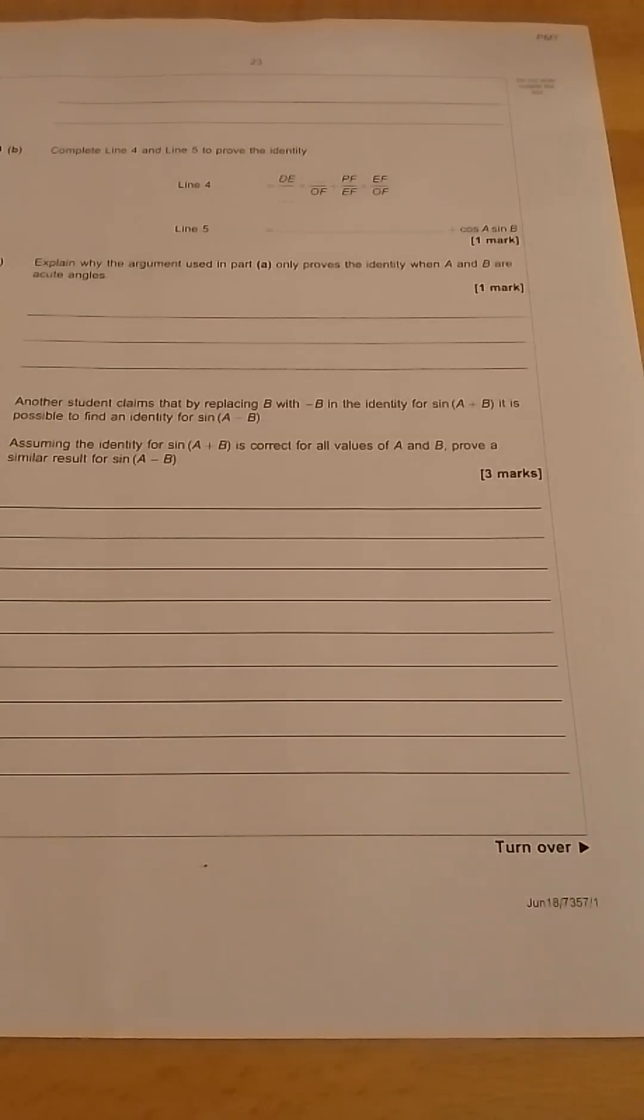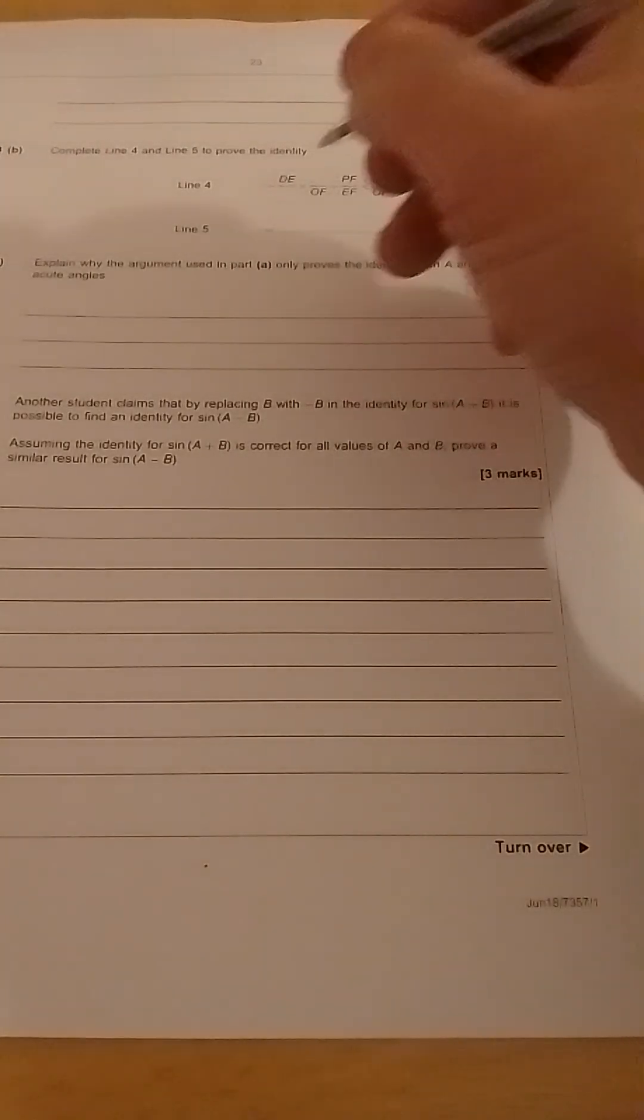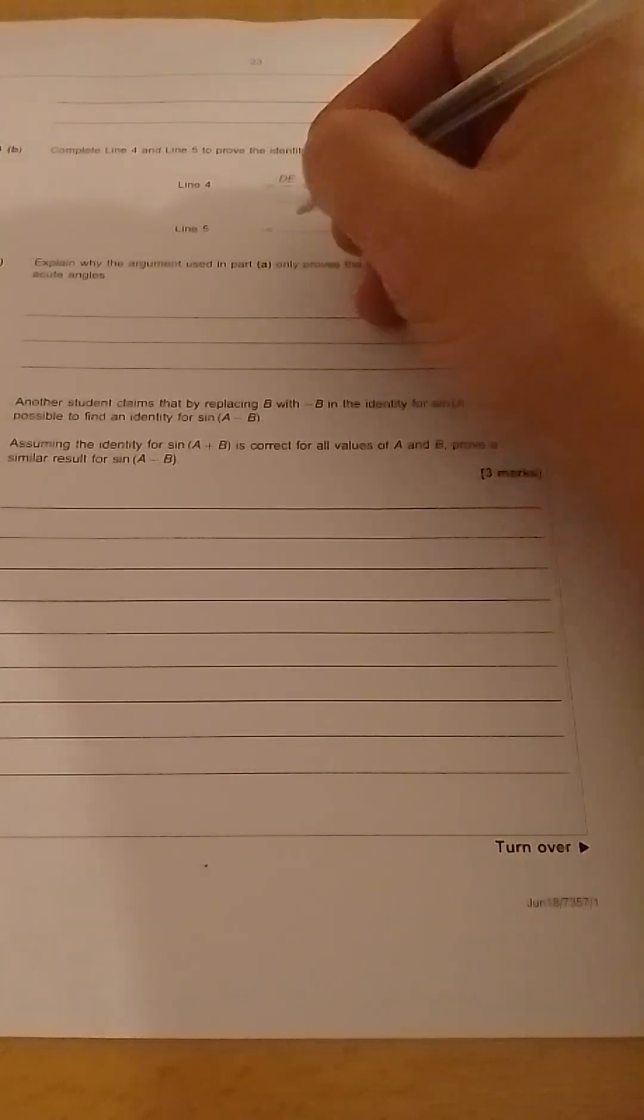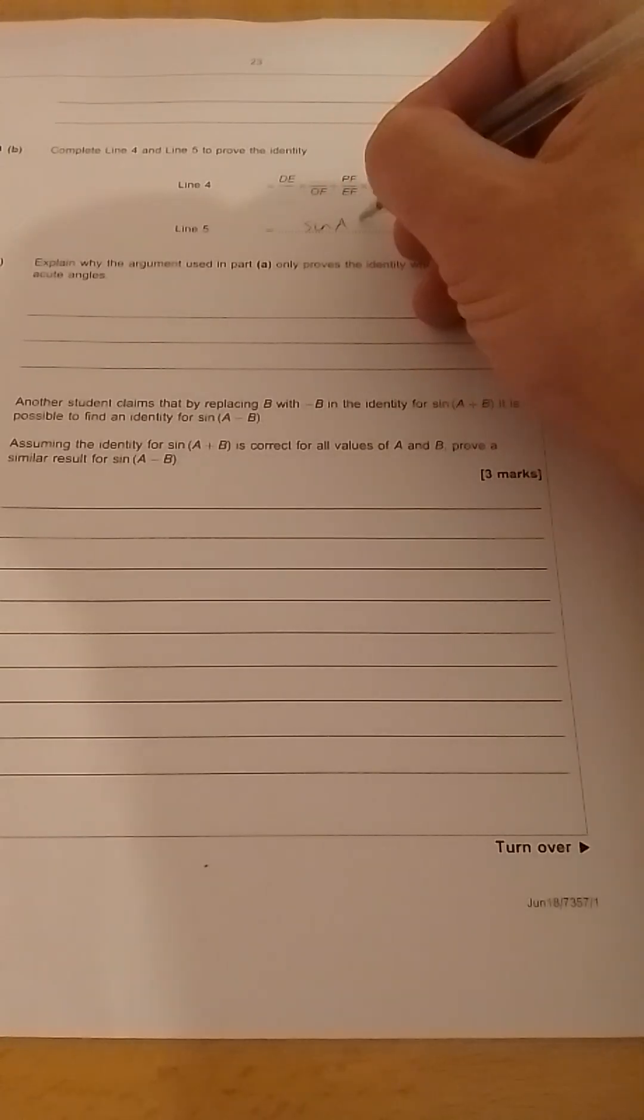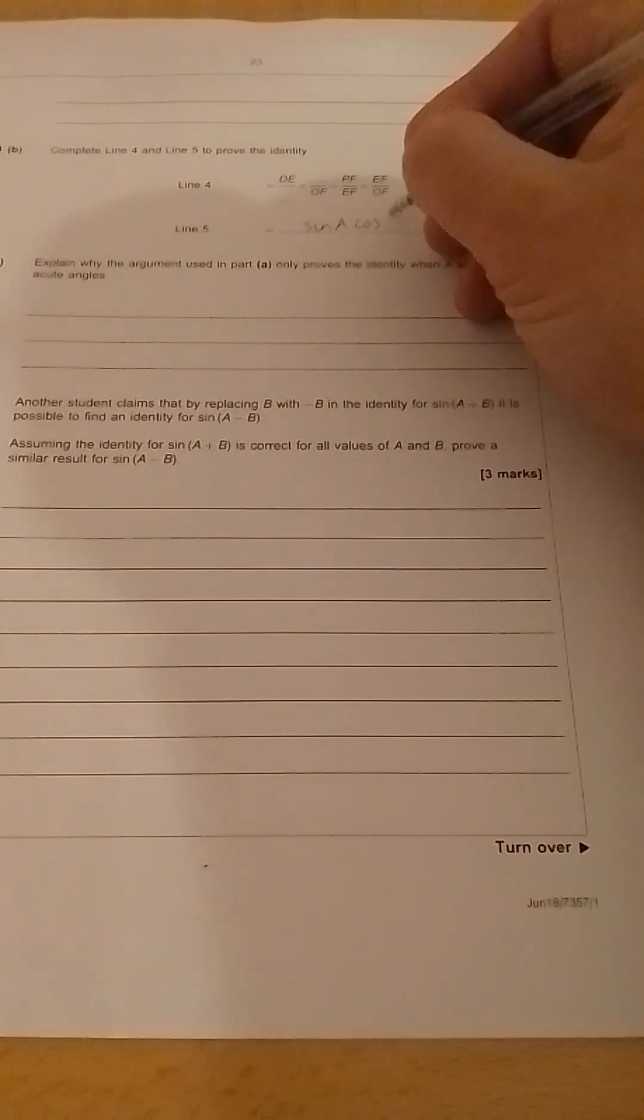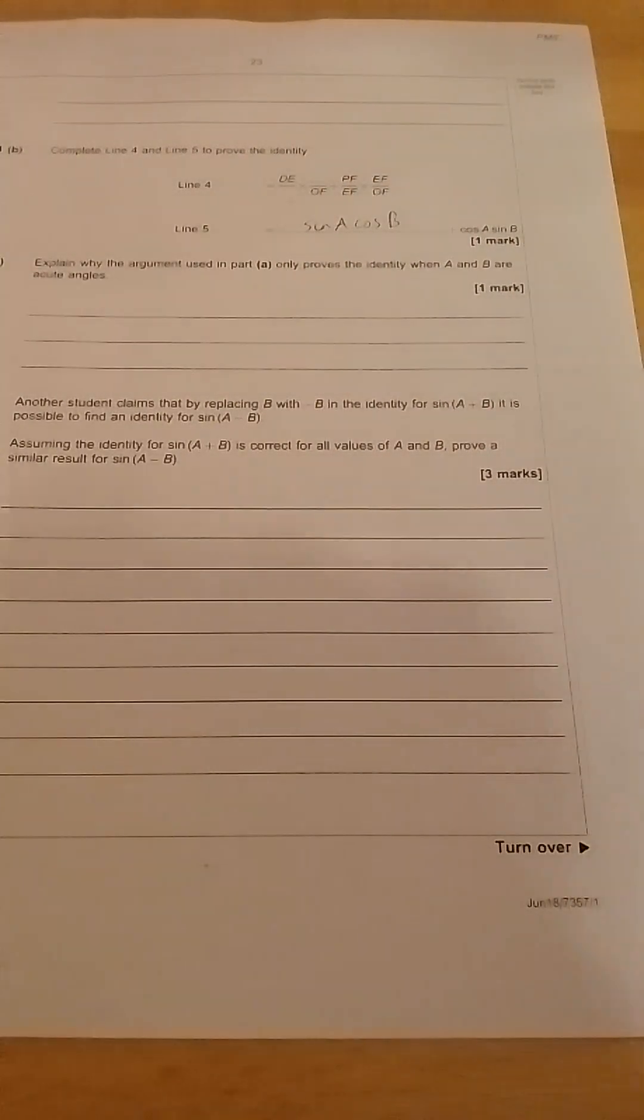It says, complete line 4 and line 5 to prove this identity. DE over something times something over OF, and then that should give you the second part of the identity. Now if you know the identity, you know that line 5 should be sin A cos B, and then we've got the second part of the addition angle formula.